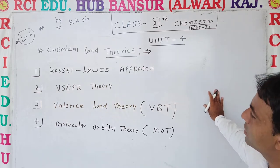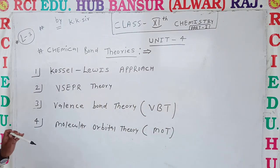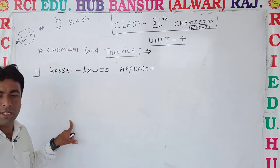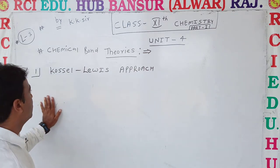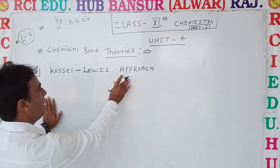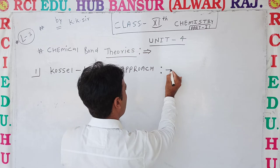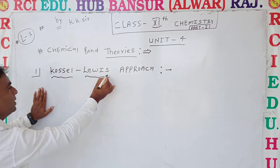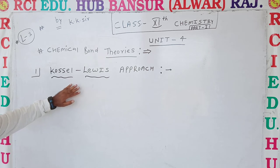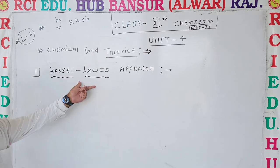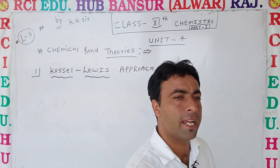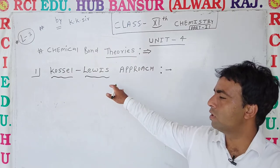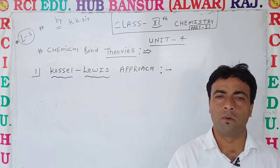First is the Kossel-Lewis approach. In the Kossel-Lewis approach there are two scientists: one is Kossel and the second is Lewis. This is the starting point of bond theory — it was first of all given by Kossel and Lewis, who tell us about bond formation. This later became the modern concept of chemical bonding.